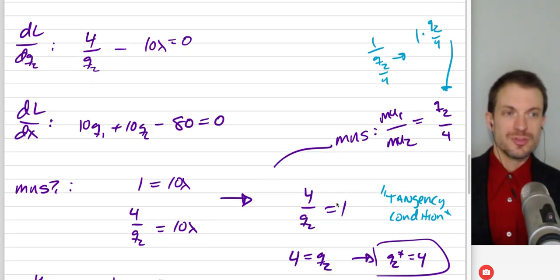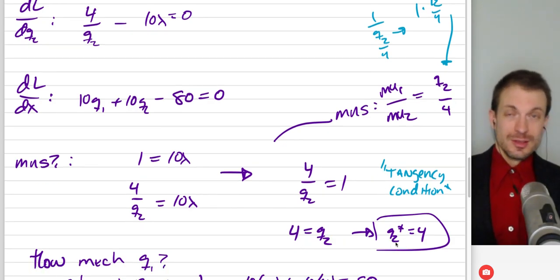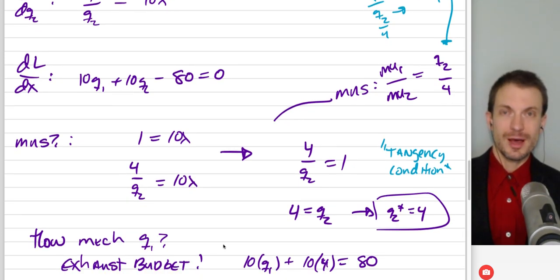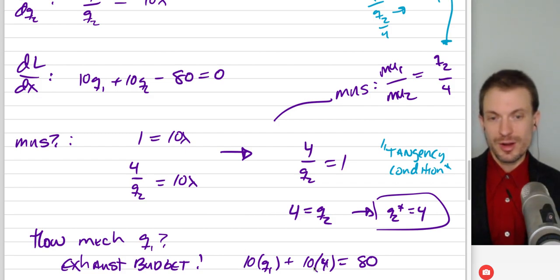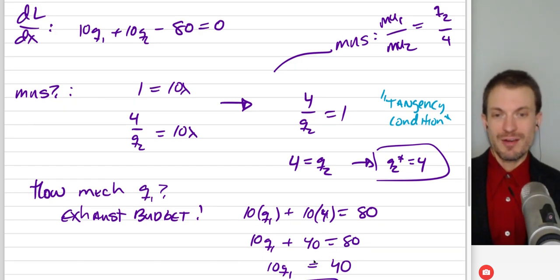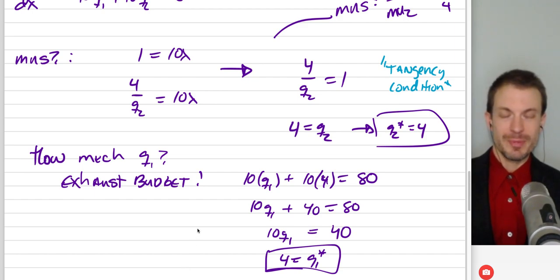I'm going to equate this to our price ratio, which is 10 over 10. That's one. So we have our tangency condition. Solving, we have Q2 is equal to 4, which tells us Bob wants four units of good two. We have to figure out how much good one Bob wants. We have to exhaust the budget. So Bob is going to buy four units of good two. Bob's got money left over. To be optimizing, Bob needs to exhaust Bob's budget. So we have 10 times Q1 plus 40 equals 80, which tells us that after spending 40 on good two, Bob is going to have 40 left over to spend on good one at a rate of 10 per good one. Bob's going to buy four units of good one. So Bob's optimal selection is to buy four units of each when prices are 10 for each good and Bob's income is 80.